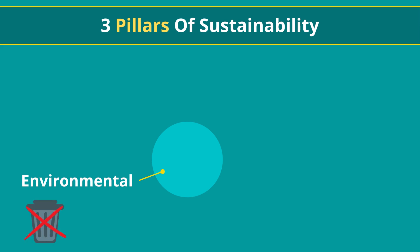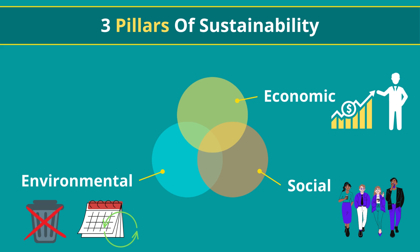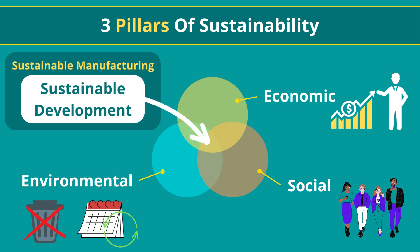Environmental: reducing wasted energy and materials, making products of better quality that last longer, and much more. Economic: a more efficient business will make more profit. Social: the additional profit can be invested in improving the working conditions, creating more jobs, and giving back to the local communities.